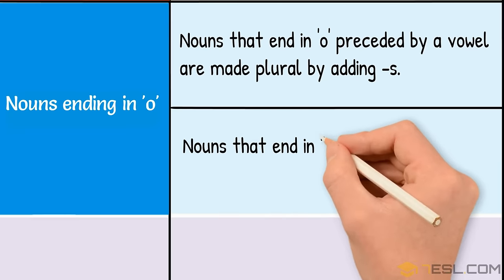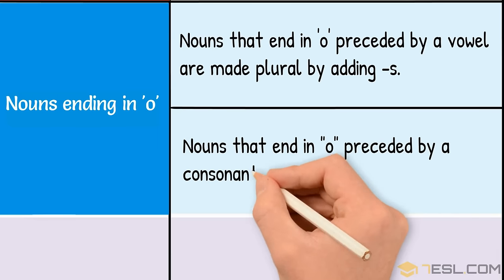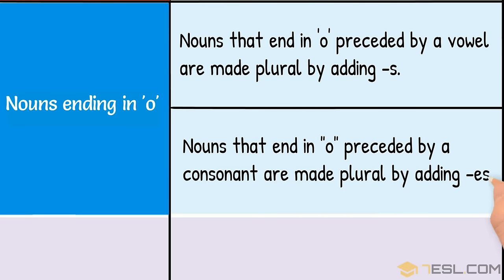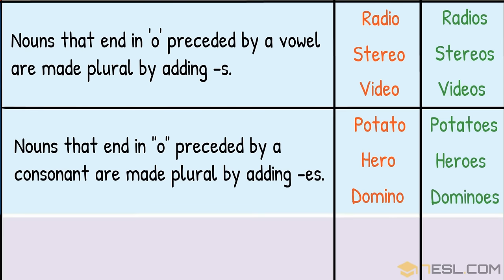Nouns that end in O preceded by a consonant are made plural by adding ES. Potato, potatoes. Hero, heroes. Domino, dominoes.